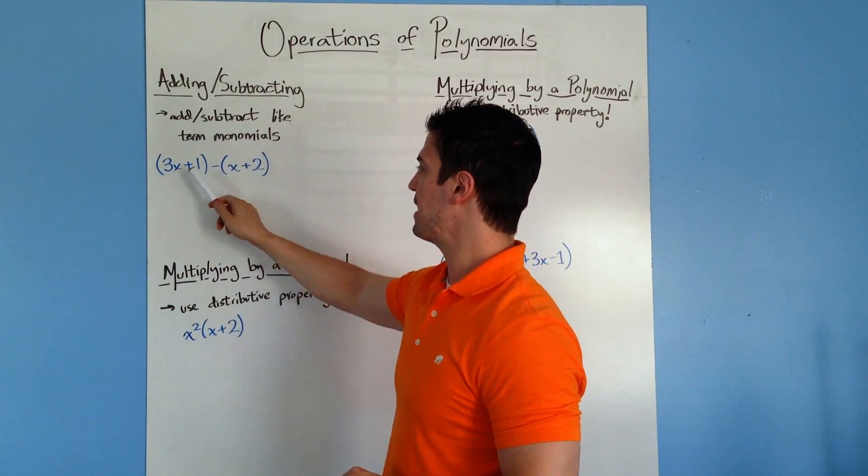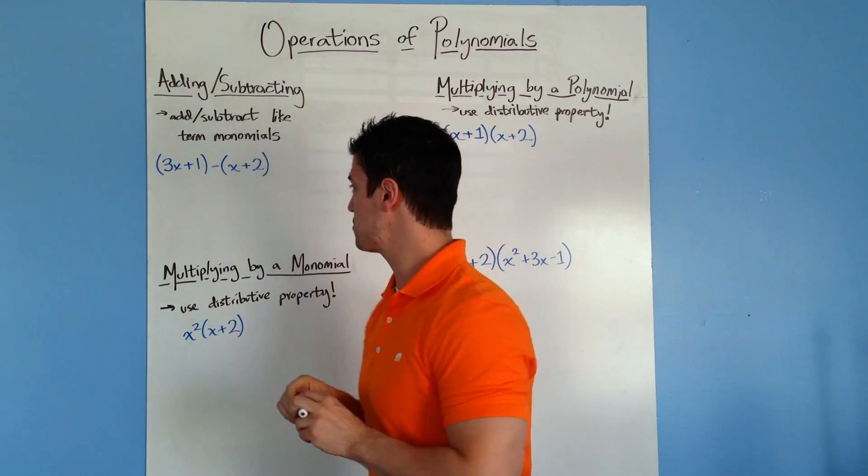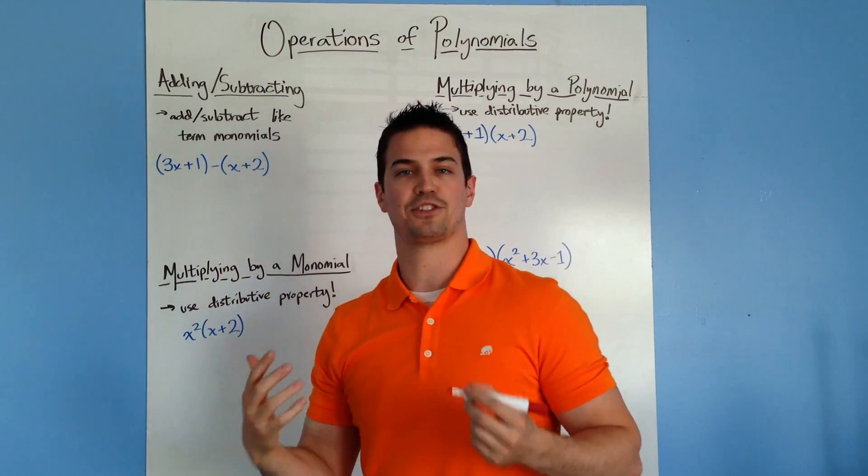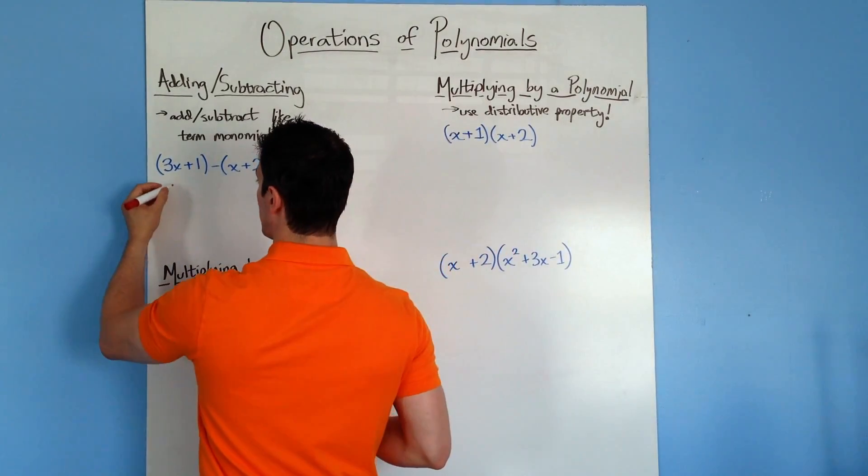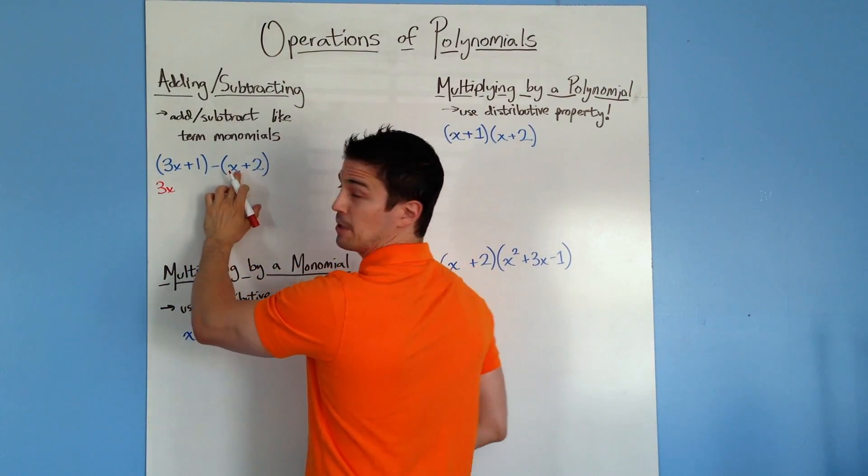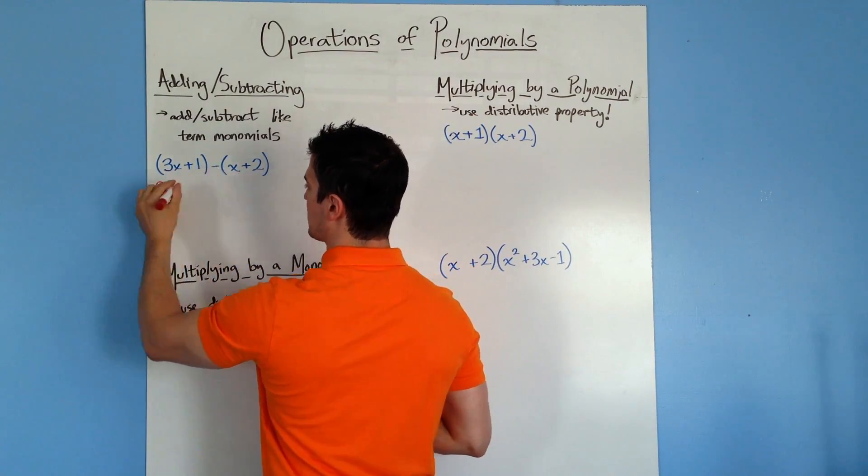So I have an example right here, 3x plus 1 minus the quantity x plus 2. So what I'm going to do is rearrange these terms so they match up based on the like terms. So I'm going to put the 3x with this x right here,